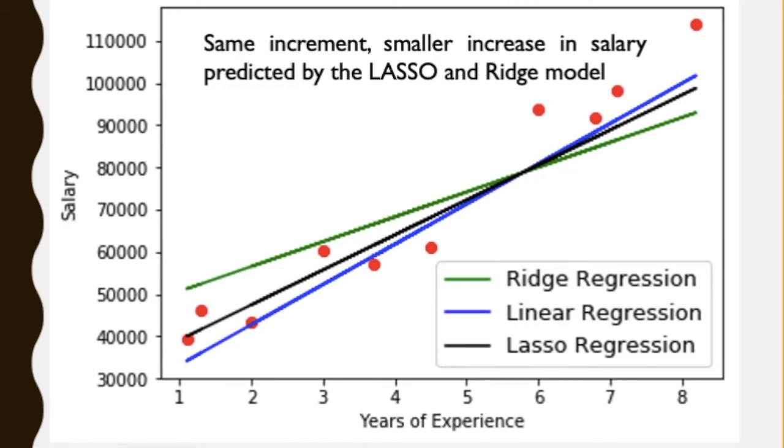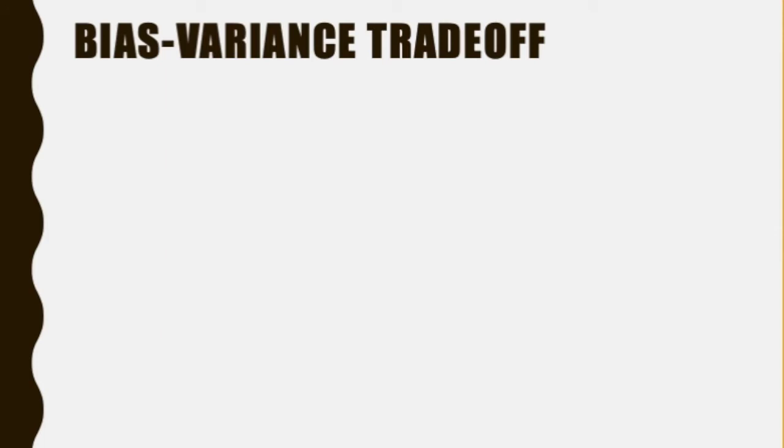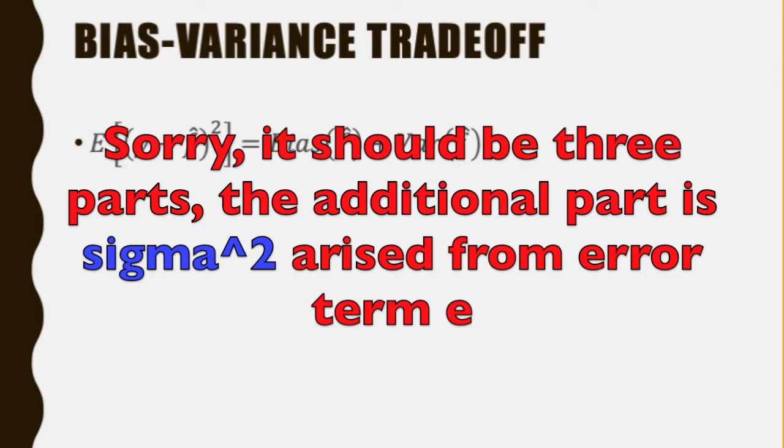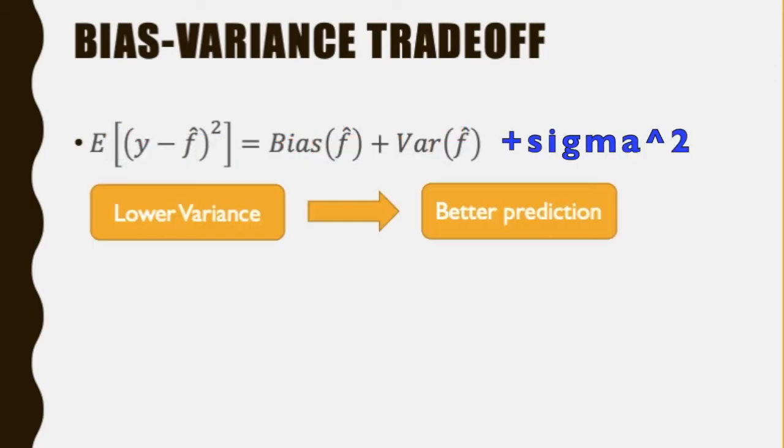In machine learning, we say that Lasso and Ridge have lower variance. Interestingly, the residuals or the difference between real y values and its prediction can be broken into two parts, bias of the estimator and the variance of the estimator. Since Lasso and Ridge regression decrease the variance of the estimator, they can sometimes improve the out-of-sample prediction.